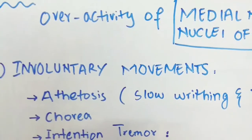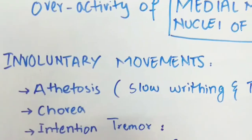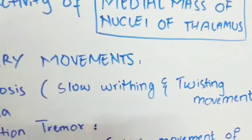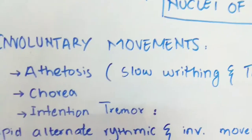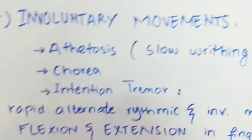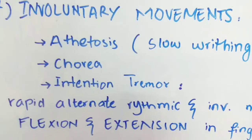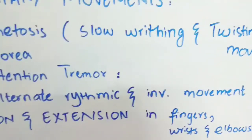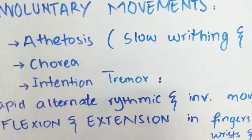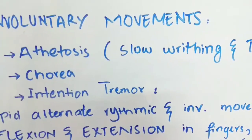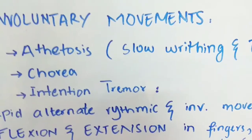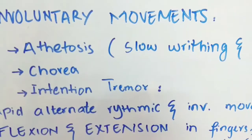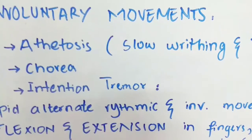The seventh symptom is involuntary movements. These include athetosis, which is slow writhing and twisting movement, and chorea, which is a quick jerky involuntary movement, and intention tremor. In thalamic syndrome, tremor is a rapid, alternating, rhythmic, and involuntary movement of flexion and extension in the joints of the fingers, wrists, and elbows. These intention tremors occur when the patient attempts to perform some voluntary act, and they are a very common sign of thalamic syndrome.